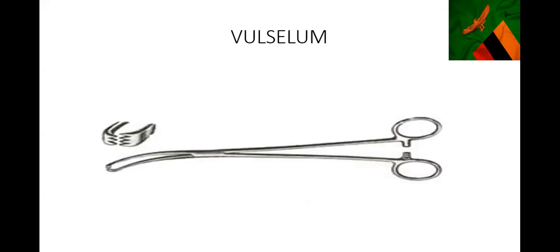This is a Vulsellum. The way to identify it is that it has rat-tooth-like teeth - three on one side and four on the other - and it has a lock on the handle. Also, when you lock it, there's a gap in front which doesn't close. So even if the teeth close, there's a gap in between. That's the Vulsellum.